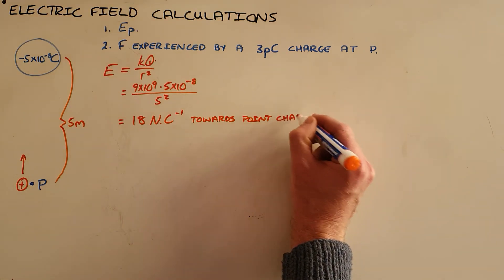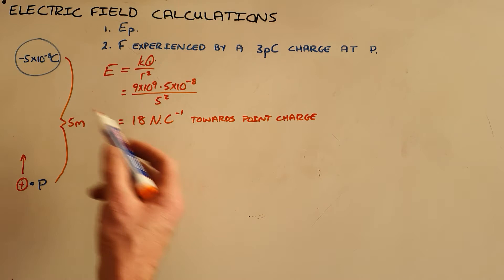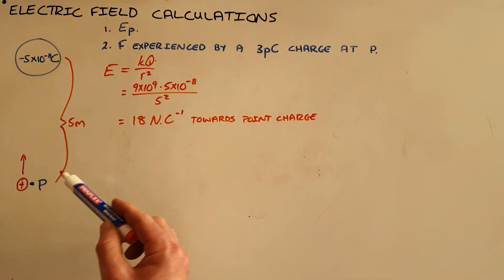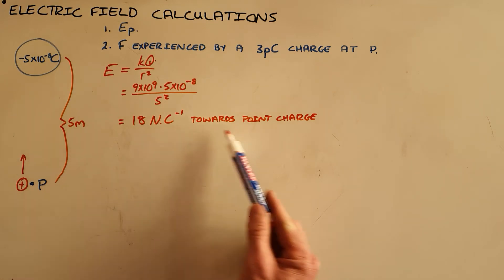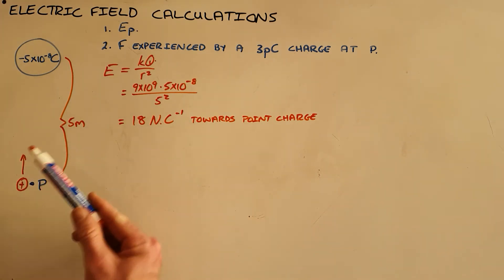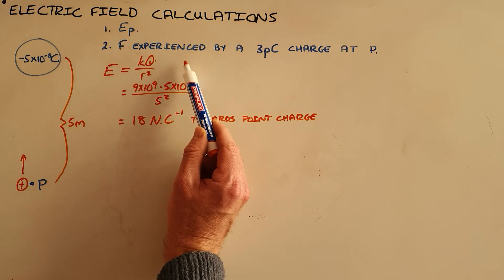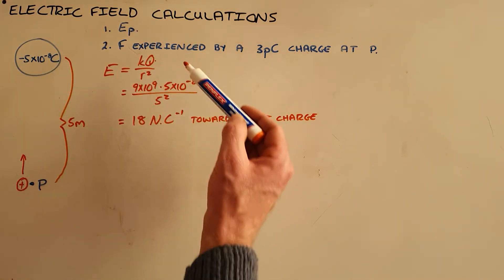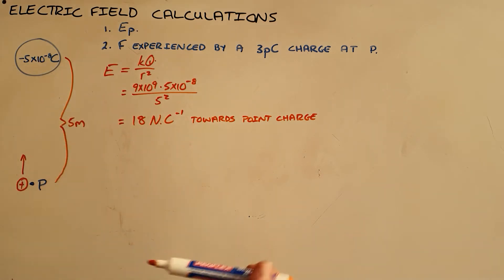So, we have now calculated the electric field at a point 5 meters away from this charge. Important to note here that by directing it as towards this point charge, instead of saying upward, this will always be true. So, if the point P is drawn here 5 meters away, the direction would still be correct as it is still towards that point charge.